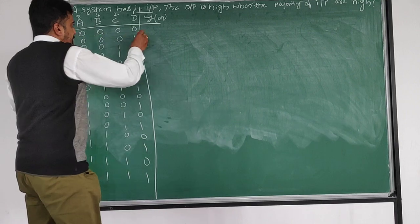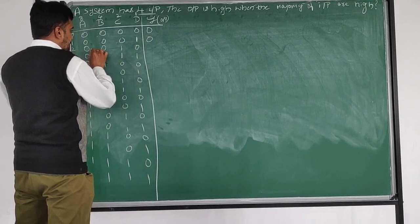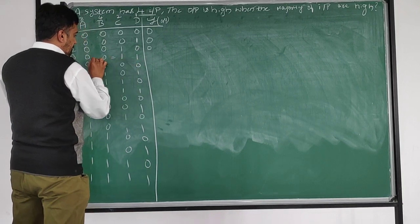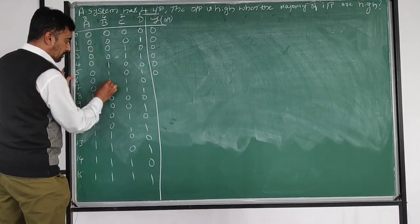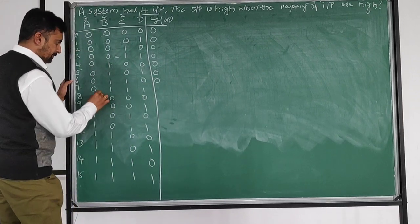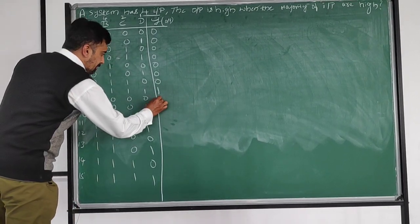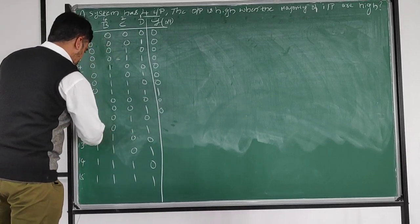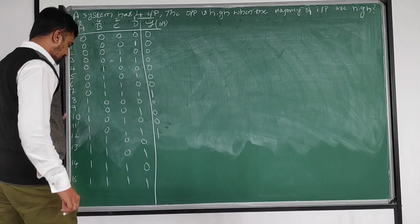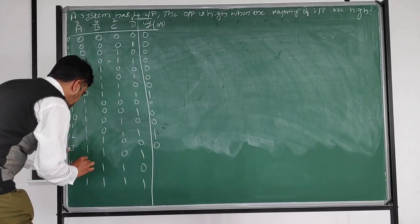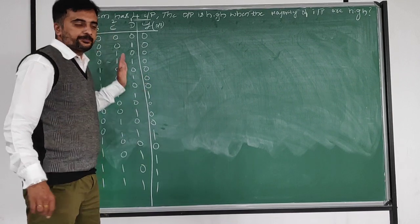For each row: 0000 - all are 0, no majority, output is 0. 0001 - majority of inputs are not high, output 0. 0010 - output 0. 0011 - both equal, not majority, output 0. 0100, 0101, 0110 - majority is not there, output 0. 0111 - 3 ones, majority is high, output 1. Similarly rows 11, 13, 14, 15 have majority of inputs high, output 1. These are the outputs - first check completed.